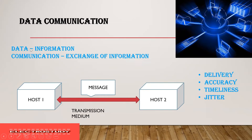The information-passing line is called the transmission medium, or it can be named as a link. The data from host one is passed on and shared to host two at the other end. This passing of information should have four parameters: delivery, accuracy, timeliness, and jitter.